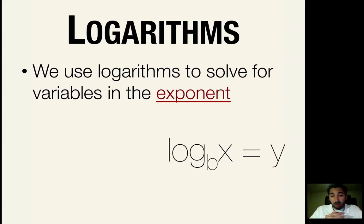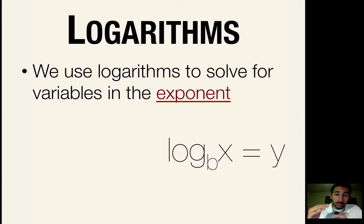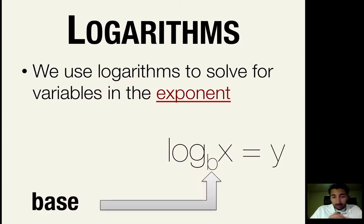Logarithms come in the form: log, then you have b which is your base, then a number represented by x, and that equals y. The way you read it is: log base b of x equals y. That b is your base, and the base is going to remain the same — between exponentials and logarithms, our bases are always going to remain the same.